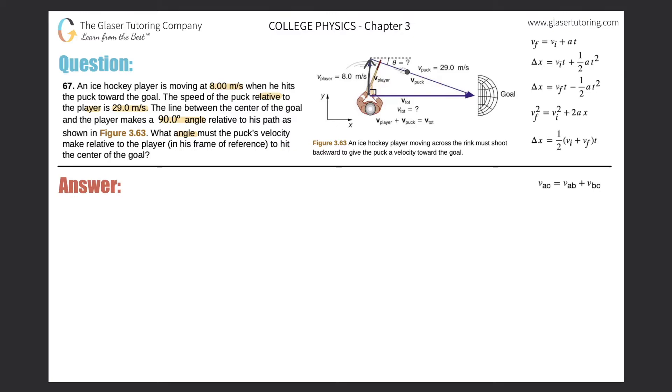It is moving at this particular location at 8 meters per second essentially due north, and then the player is going to impart a velocity to the puck in this direction of 29 meters per second, and what they want us to do is find essentially this angle.